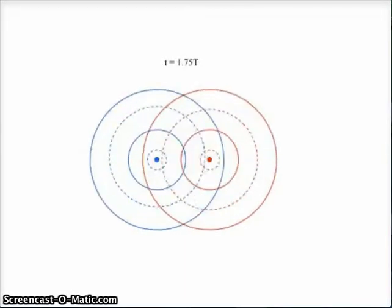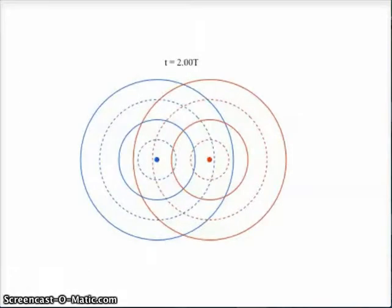So we continue stepping forward in time, seeing these waves propagate outward. And here, we have an image like what we started with, just color-coded to make it easier to interpret.